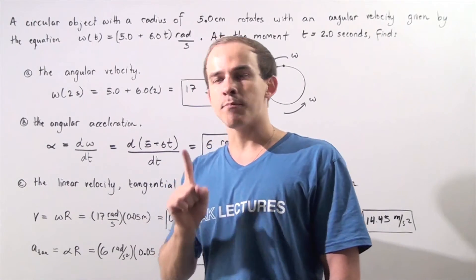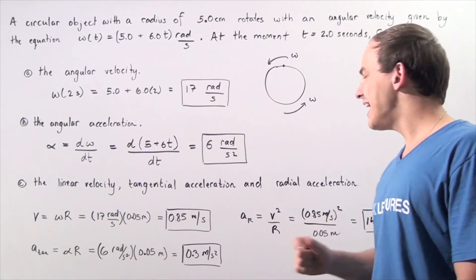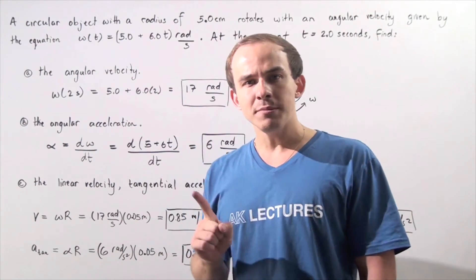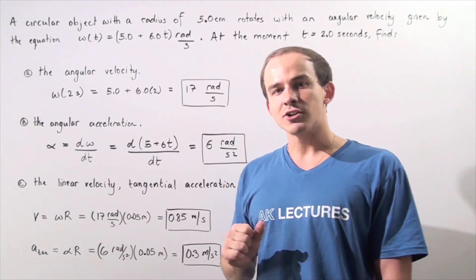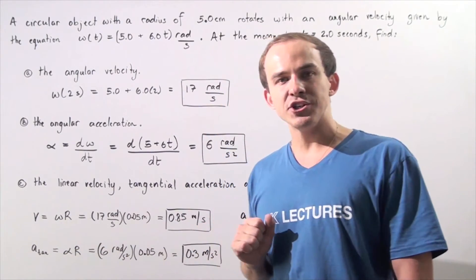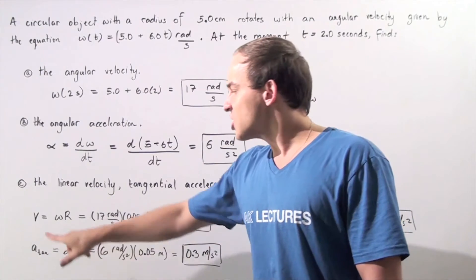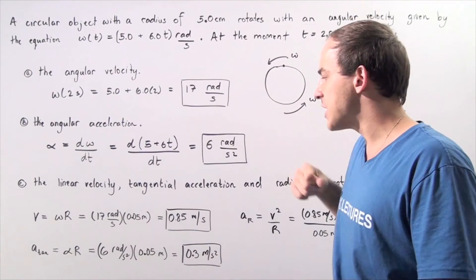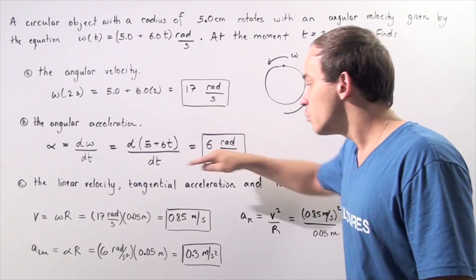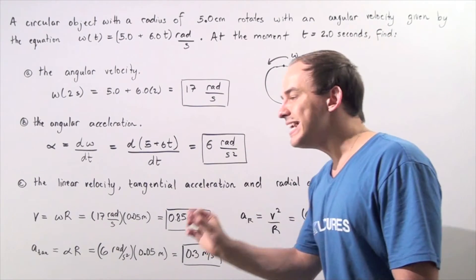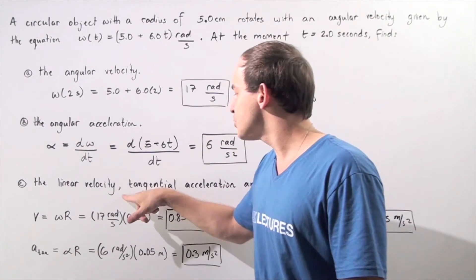Finally, let's move on to part C, where we calculate three things: linear velocity, tangential acceleration, and radial acceleration. The formula for linear velocity relates it to the radius and angular velocity: linear velocity equals radius times angular velocity. We found the angular velocity at 2 seconds is 17 rad/s, and the radius is 0.05 meters. So our linear velocity at t equals 2 seconds is 0.05 times 17, which equals 0.85 meters per second.